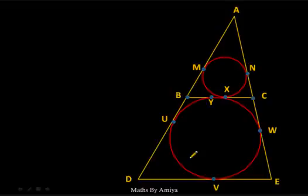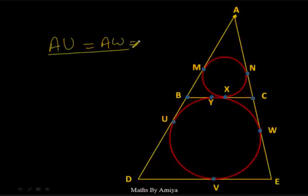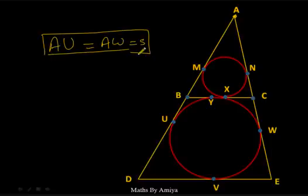Now the most important concept: if we have a triangle with two incircles — one inside the smaller triangle ABC and one inside the quadrilateral — then AU = AW, because A is the tangent point to the bigger circle and AU and AW are both tangents from A. This value equals the semi-perimeter of small triangle ABC.